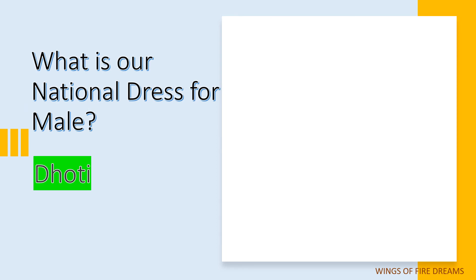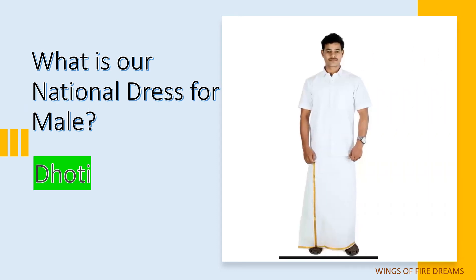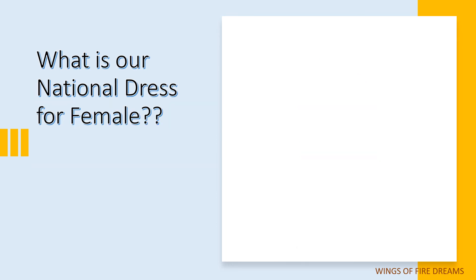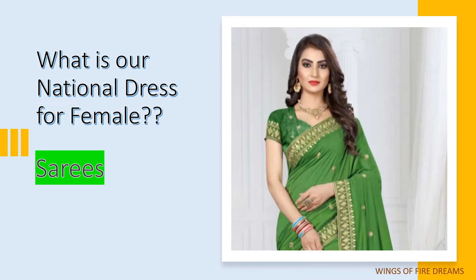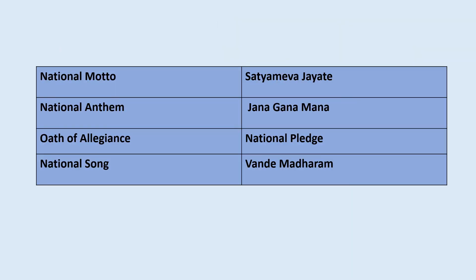What is our national dress for male? Dhoti. What is our national dress for female? Sari. Our national motto: Satyameva Jayate. National anthem: Jana Gana Mana.